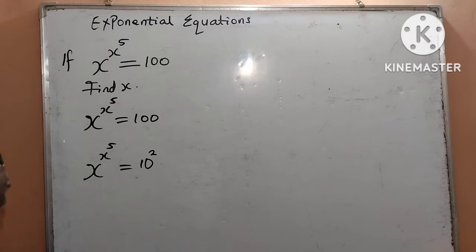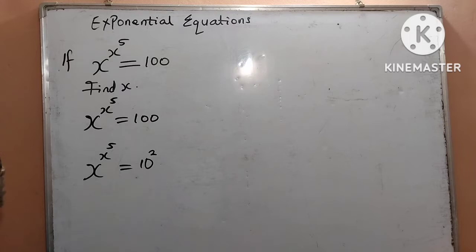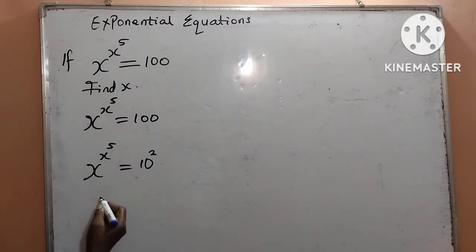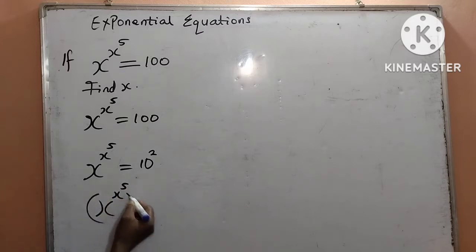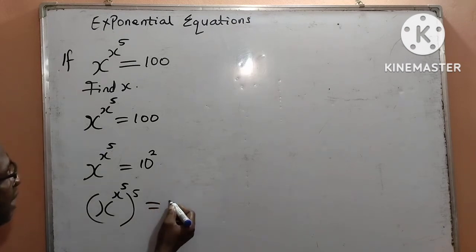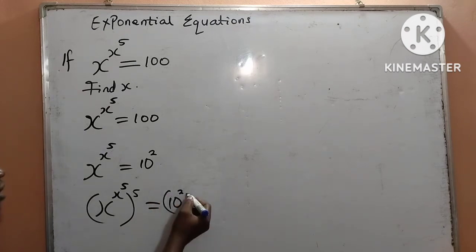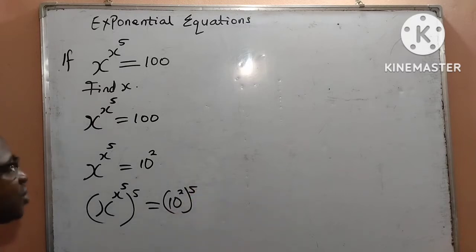Then we are going to multiply both sides of the power by 5. That will give us x to the power of x to the power of 5, everything to the power of 5, is equal to 10 to the power of 2 also multiplied by 5.